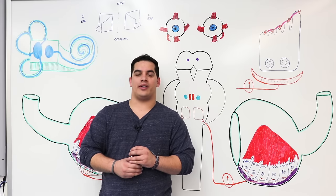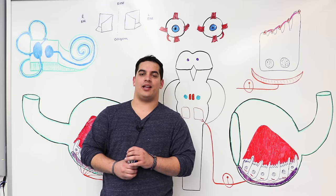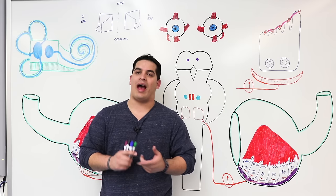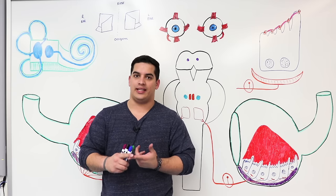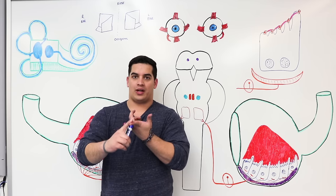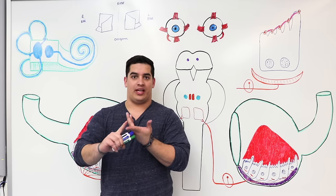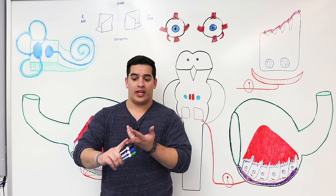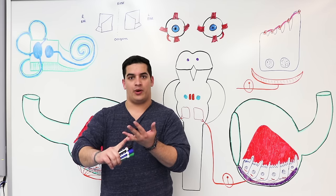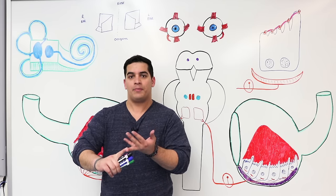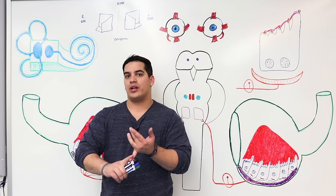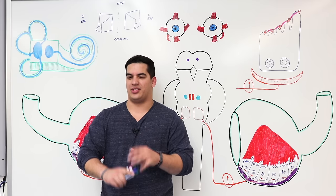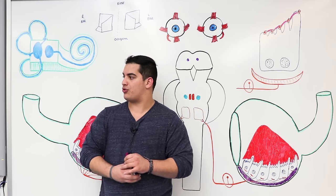Hi Ninja Nerds, in this video we are going to talk about the semicircular canals. If you haven't already, please go watch the anatomy of the inner ear, watch the video on the cochlea, watch the video on the vestibule, and then now we're going to talk about the semicircular canals. These are really important structures.